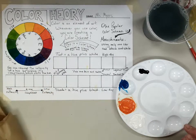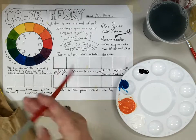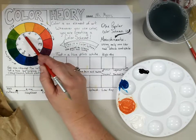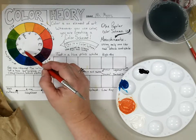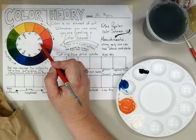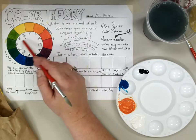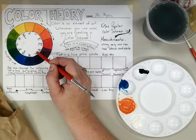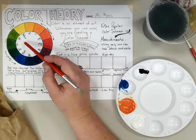We've been working on our color theory in painting. In the first video, I completed the color wheel with the primary colors — yellow, blue, and red — and then combined them to create secondary colors of orange, green, and violet, as well as mixing them in different combinations to create all of the tertiary colors like yellow-green,